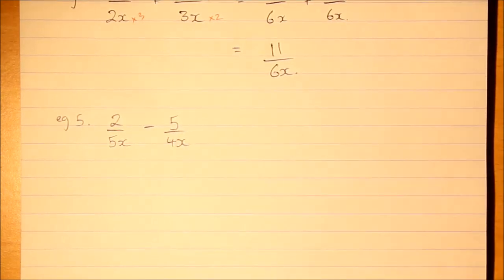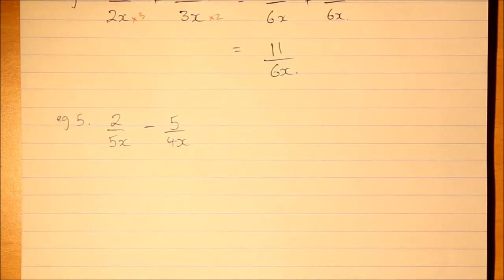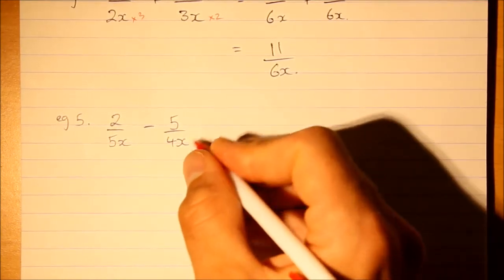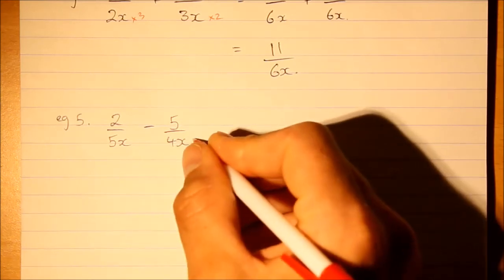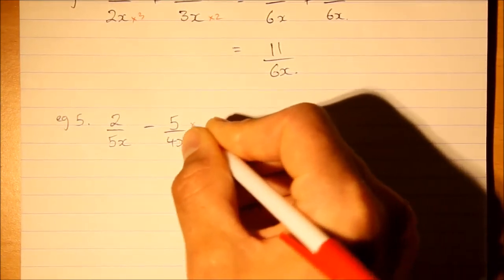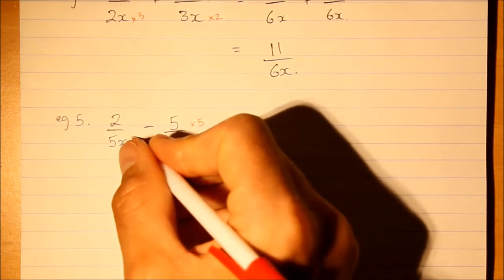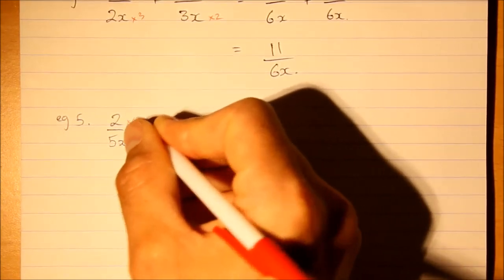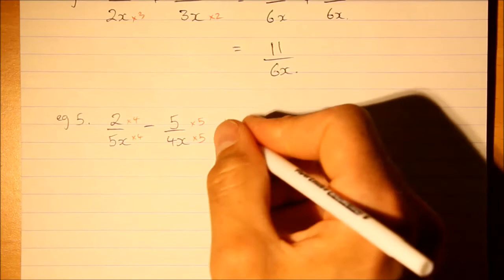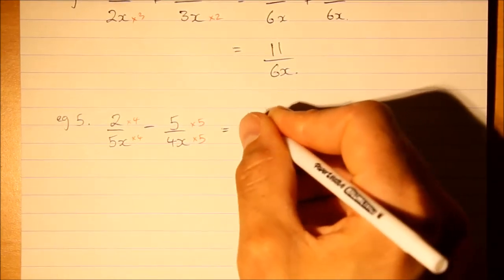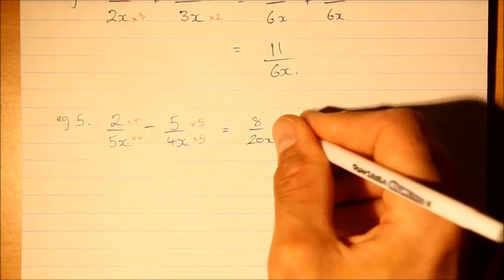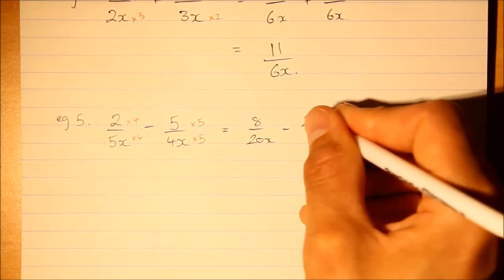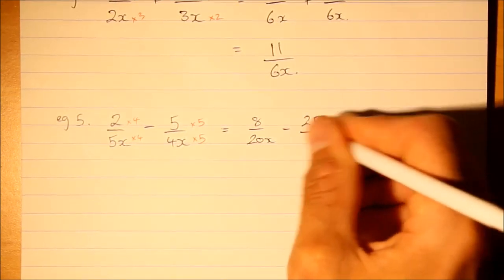Let's have a look at another one. Go ahead and try this one. What would you need to do to get the denominators the same? If you've had a go, hopefully you've seen I can multiply this by five and this side by four. What you do to the bottom, do it at the top. We get eight over 20x minus 25 over 20x.